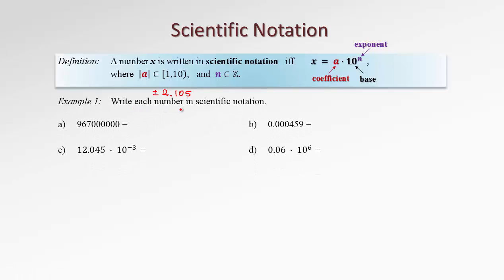Let's see how it works. Write each number in scientific notation. To rewrite this large number in scientific notation, I need to follow the rule: write the coefficient by taking the first non-zero digit, which is 9, place a dot, and write the rest of the meaningful digits — just 6 and 7. We don't need to write zeros after 7. Now, since our original number is not 9-point-something, we fix this by multiplying by a power of 10. Let's count how many places we need to move the decimal dot placed after 9: 1, 2, 3, 4, 5, 6, 7, 8. So that would be 10 to the 8.